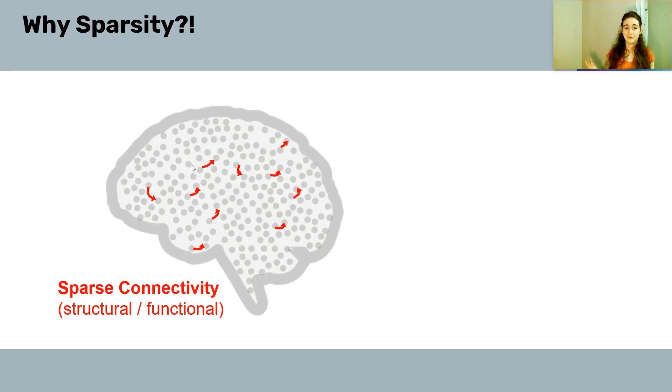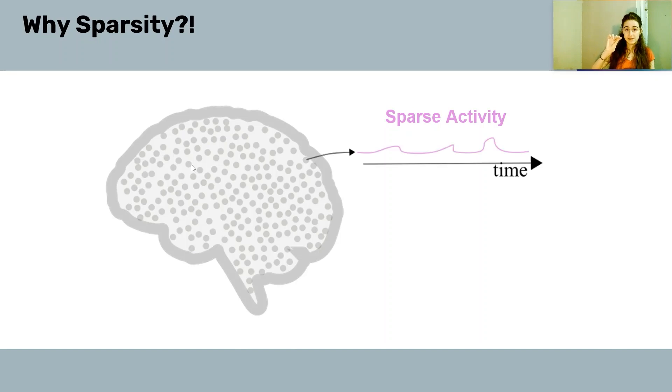In addition to sparse connectivity, we also have sparse activity. We can look at the temporal activity of specific neurons—the temporal activity patterns present sparse activation patterns. There are some periods where some neurons barely fire, basically presenting zero-ish activity, in contrast to some other periods where the neurons fire.